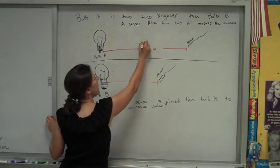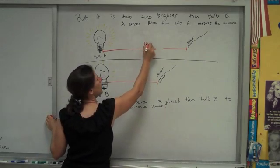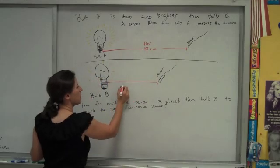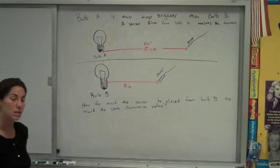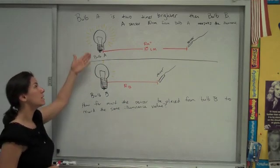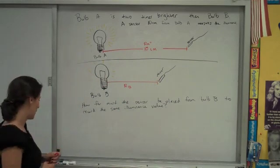So maybe I'll call this first distance RA, the distance to bulb A in this experiment, and what we don't know is RB, how far away the sensor is in this experiment. We do, however, know the illuminance is the same in both separate experiments.